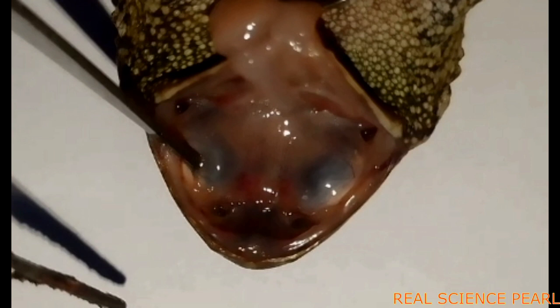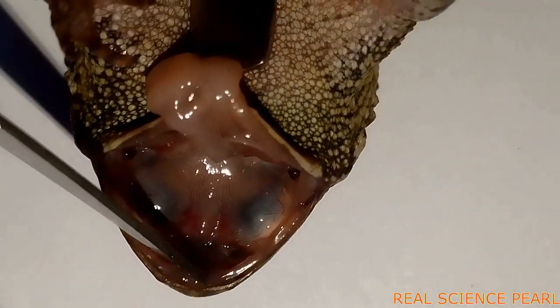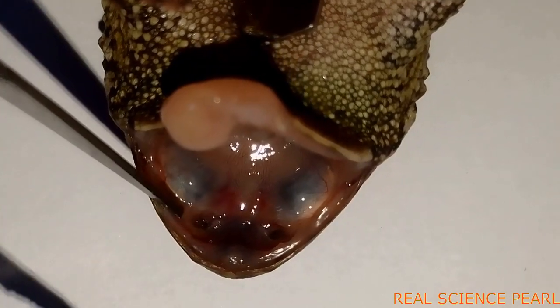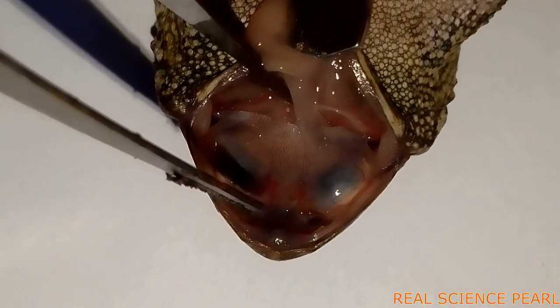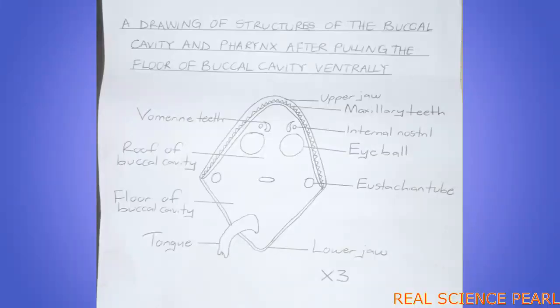We may be required to draw the structures of the buccal cavity after pulling out the tongue. Be careful — they can tell you to cut along the left side so that you display the ventral roof of the buccal cavity, with the lower jaw to the right. This is a different drawing from when you have just opened it. I am going to show both cases: when we cut and when we don't cut.